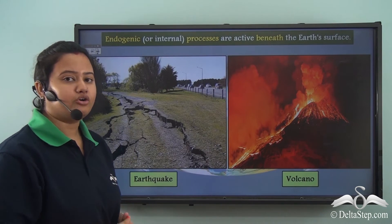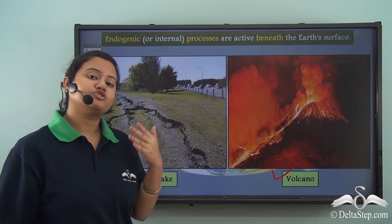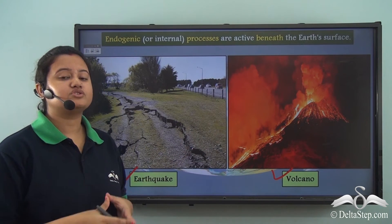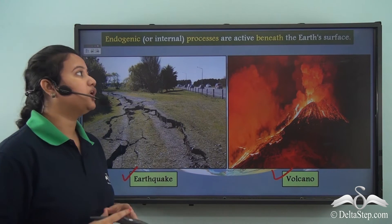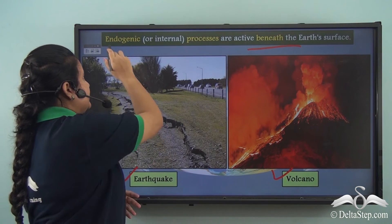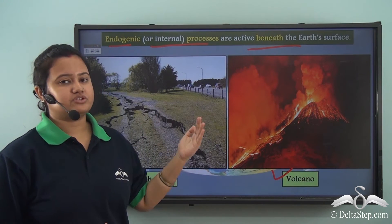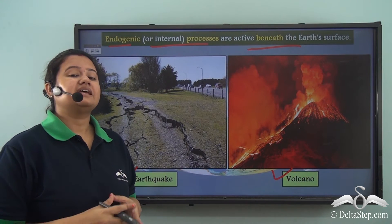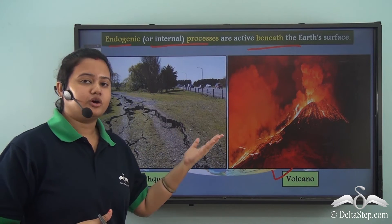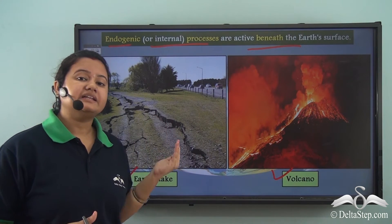You must have heard of natural calamities like earthquakes and volcanoes. These are caused due to forces acting inside the earth or beneath the earth's surface, and these forces are known as endogenic or internal processes. Unlike exogenic processes, endogenic processes cannot be observed by us, as they act inside the earth, which is inaccessible to us.